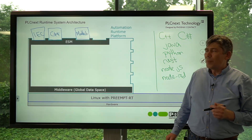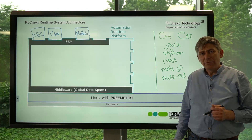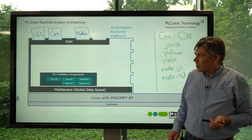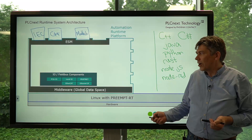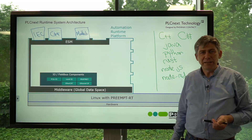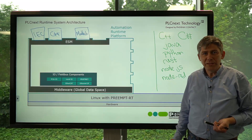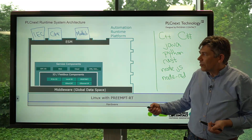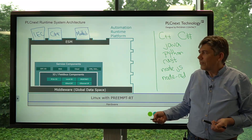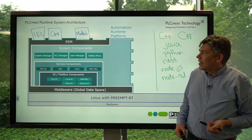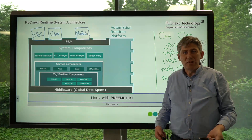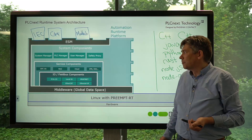So what else does the Automation Runtime Platform give us? Well, it gives us fieldbus components that provide access to IO — local IO and fieldbus IO like Profinet and Ethernet/IP. It gives us service components like the built-in OPC UA server. And it gives us system components like the user manager for password protection and so on.